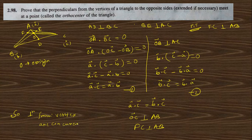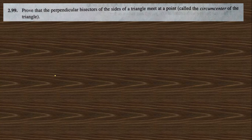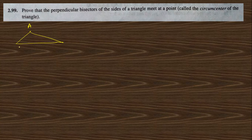Next question 2.99: prove that the perpendicular bisectors of the sides of a triangle meet at a point. Consider triangle ABC. Draw a perpendicular from each side's bisector; they meet at a single point O. Take O as the origin, with D, E, and F as the midpoints.